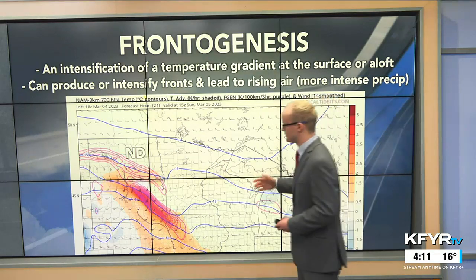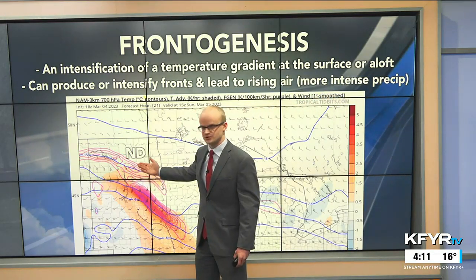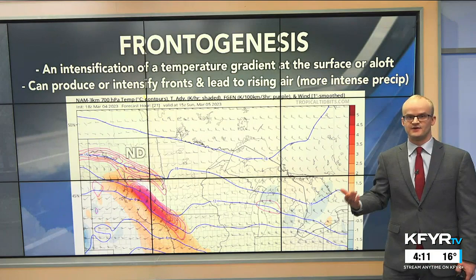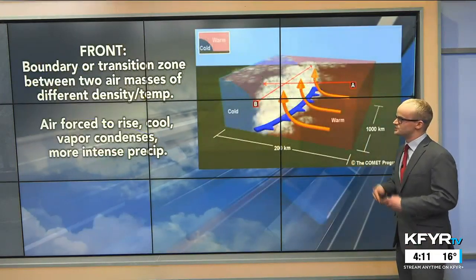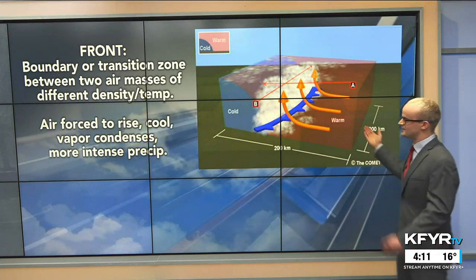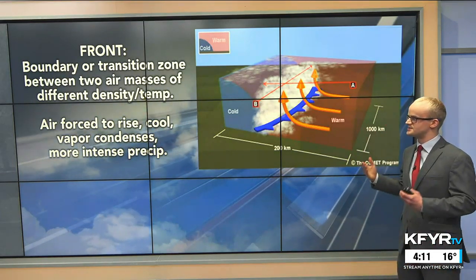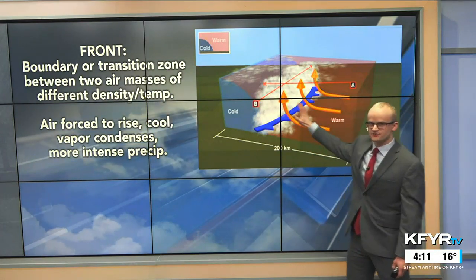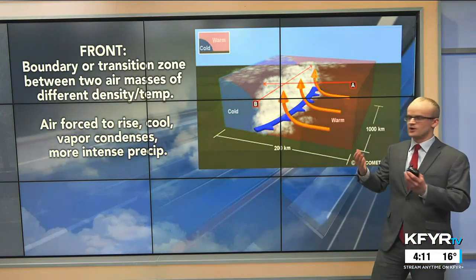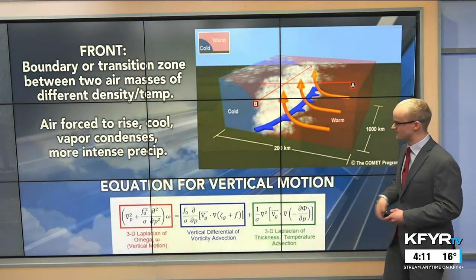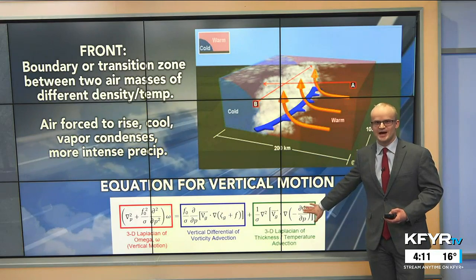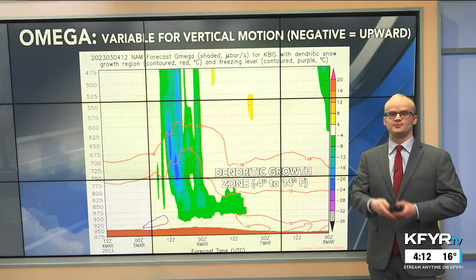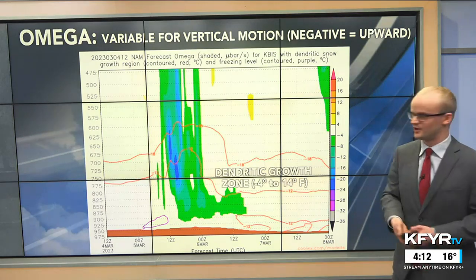Here's a model meteorologists can use to predict frontogenesis — this was a model run for Sunday, and you can see where frontogenesis was possible and where heavier snowfall rates could occur. Going back to basics: a front is a boundary or transition zone between two air masses of different density or temperature. Three-dimensionally in the atmosphere, warmer air is forced to rise along that boundary, water vapor condenses, cools, and creates more intense precipitation. It's all about that vertical motion — forecast models run complex equations to simulate it and determine where snowfall will be most intense.